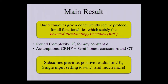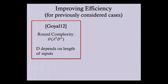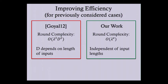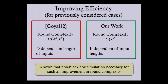Moreover, we subsume all existing positive results for concurrent computation — namely zero knowledge and the single input setting. The last application of our technique is to improve the round complexity of existing protocols. Protocols given in Goyal 2012 had round complexity polynomial in the security parameter as well as a parameter D depending on the input length. We improve this to be just a polynomial in the security parameter and independent of the length of the honest party inputs. It was known that any such improvement has to employ a non-black-box simulation technique.